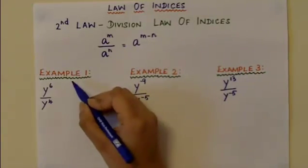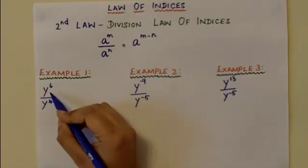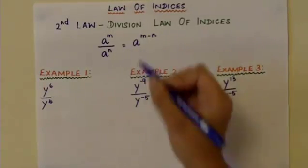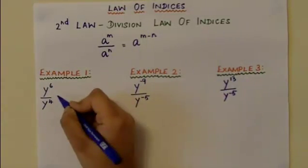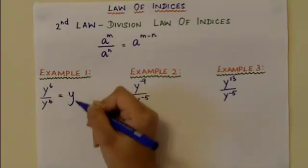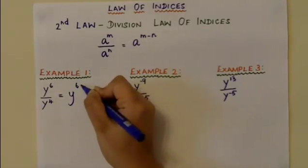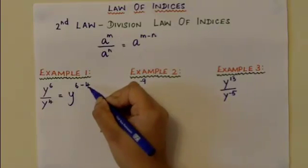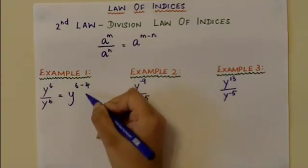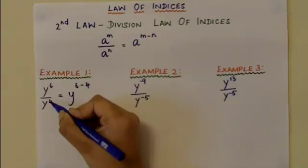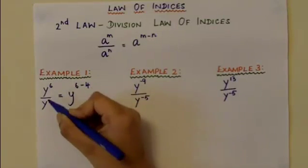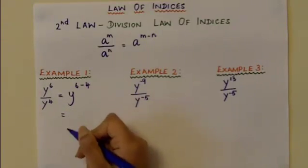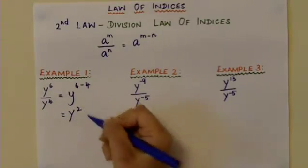Looking at example 1, you have y to the power of 6 divided by y to the power of 4. Applying the division law of indices, you have y to the power of 6 minus 4, because 6 is the power of the numerator and 4 is the power of the denominator. So you take away the power of the denominator from the power of the numerator, provided that the variables are the same, which is equal to y to the power of 2.